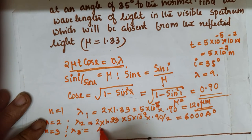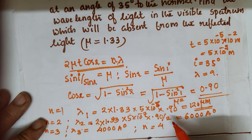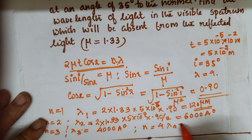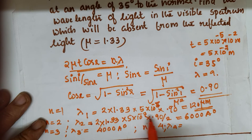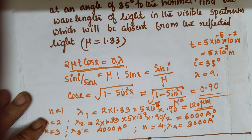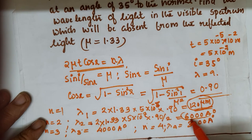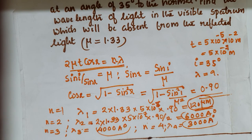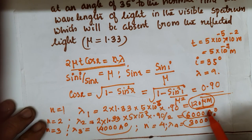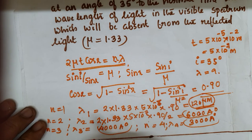When n equal to 4: lambda₄ equal to 2 into 1.33 into 5×10⁻⁷ into 0.90 divided by 4, which gives 3000 Angstroms. So the wavelengths are: 120 micrometers (n=1), 6000 Angstroms (n=2), 4000 Angstroms (n=3), and 3000 Angstroms (n=4). Only 6000 Angstroms (600 nm) and 4000 Angstroms (400 nm) lie in the visible spectrum.